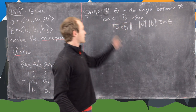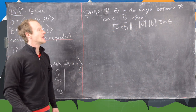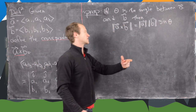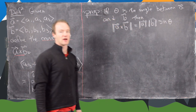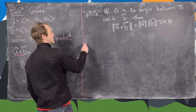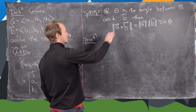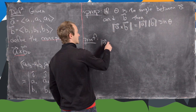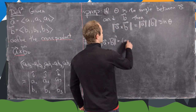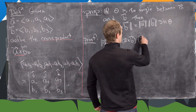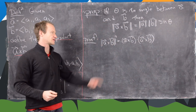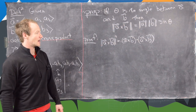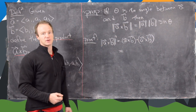The first thing we're going to do is prove this proposition which relates the angle between two vectors with the cross product: the magnitude of a cross b equals the magnitude of a times the magnitude of b times sine theta, where theta is the angle between a and b. For the proof, we'll calculate the square of this equation. The magnitude of a cross b squared equals a cross b dot a cross b, since the magnitude squared of a vector equals its dot product with itself.